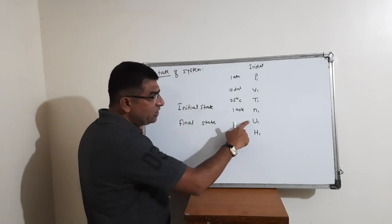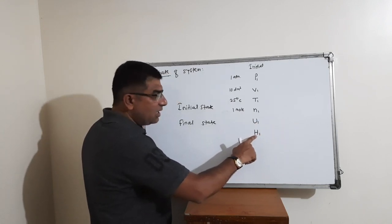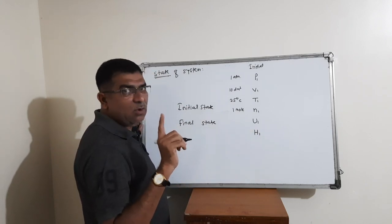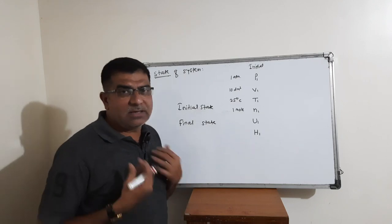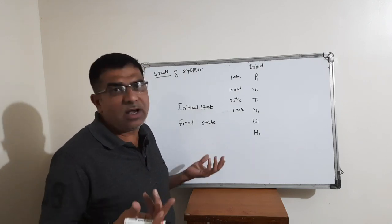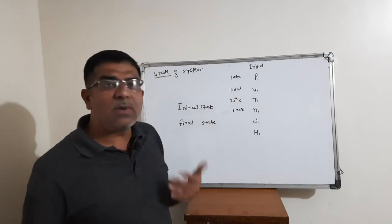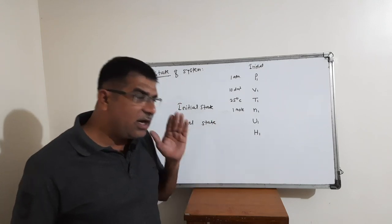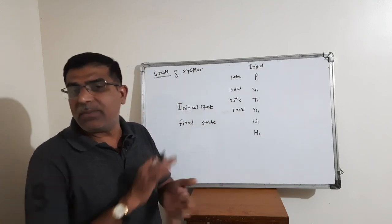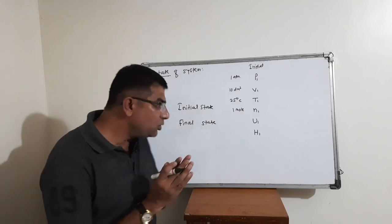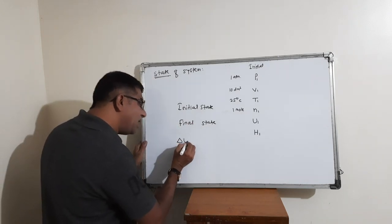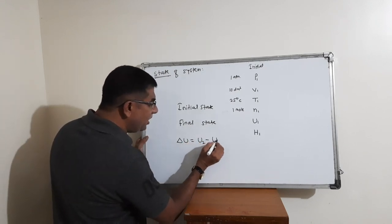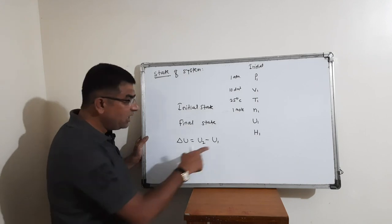We cannot calculate the absolute values of initial and final internal energy, because we cannot know how much energy is stored inside a system. However, we can calculate the difference between two internal energies: delta U = final internal energy minus initial internal energy.